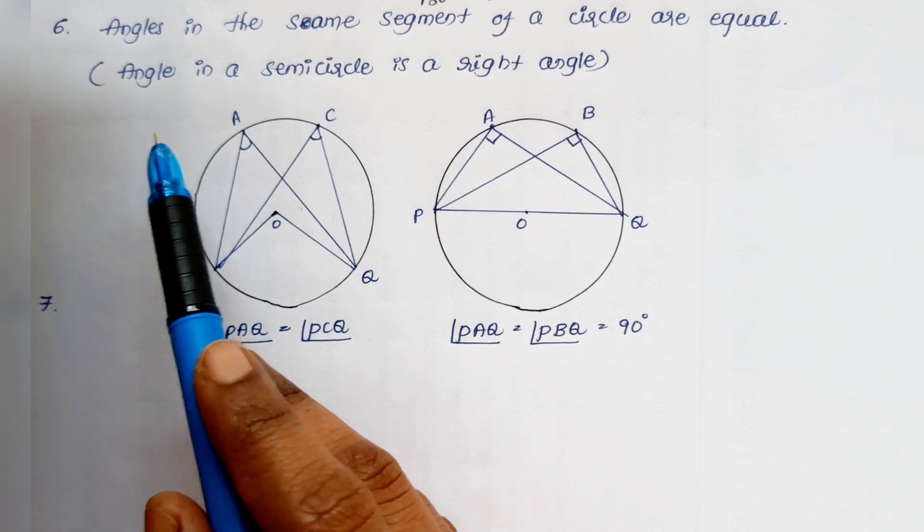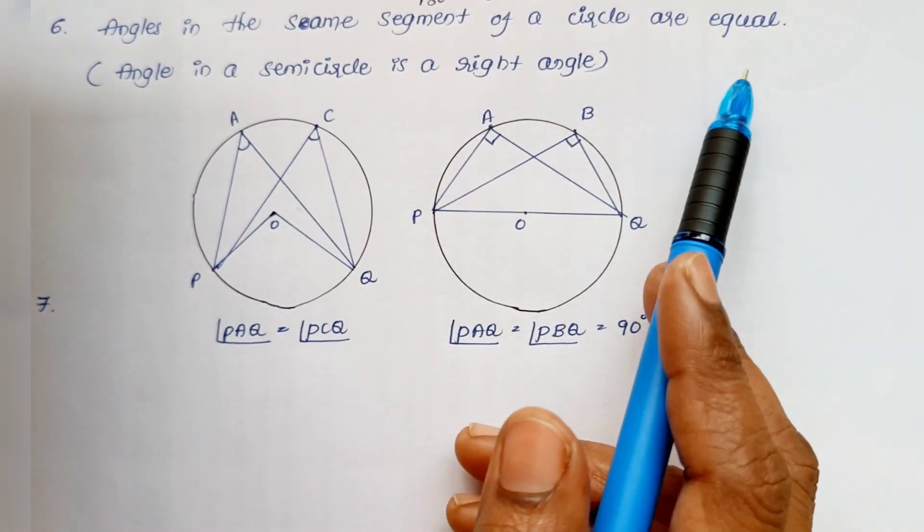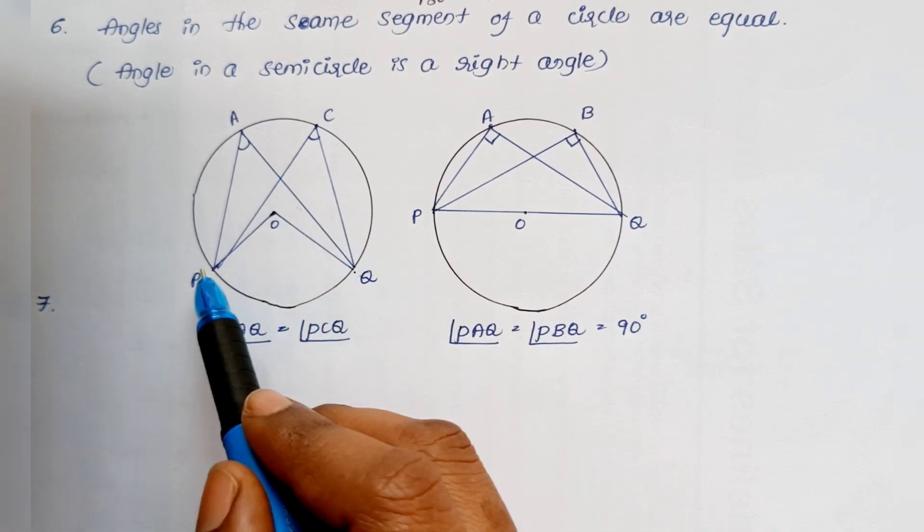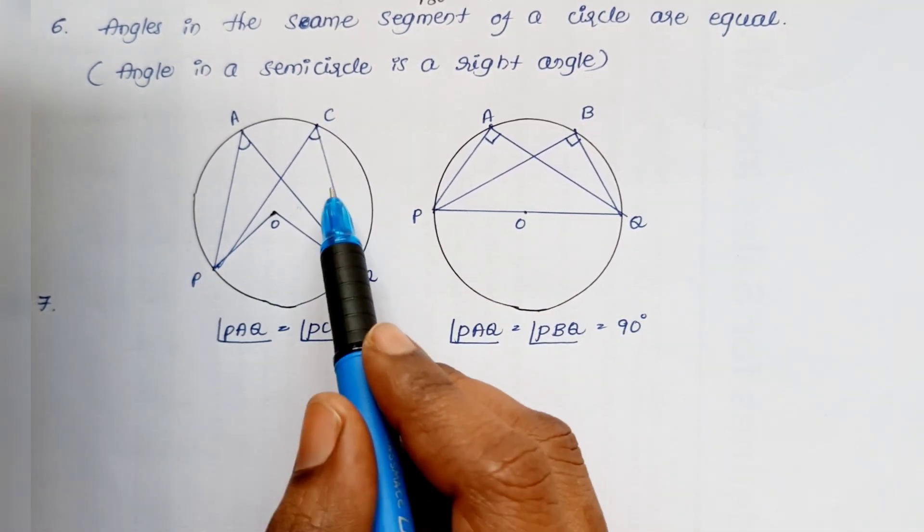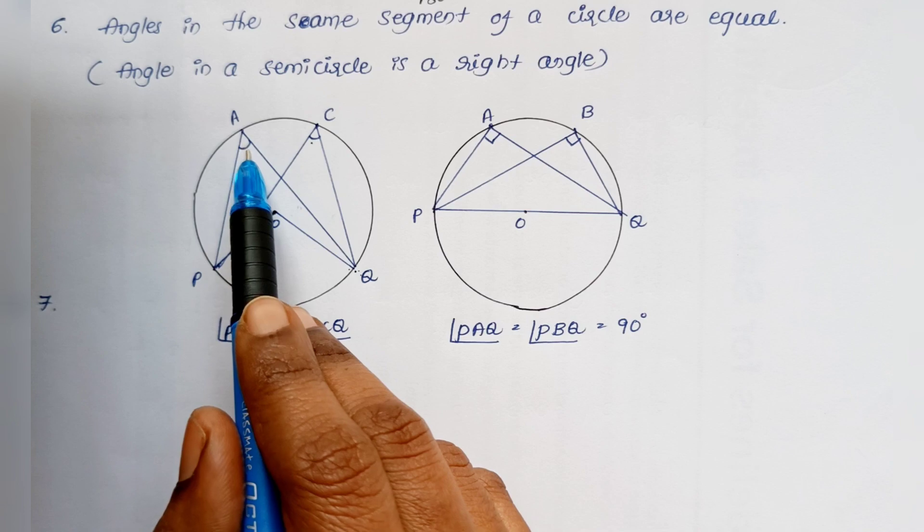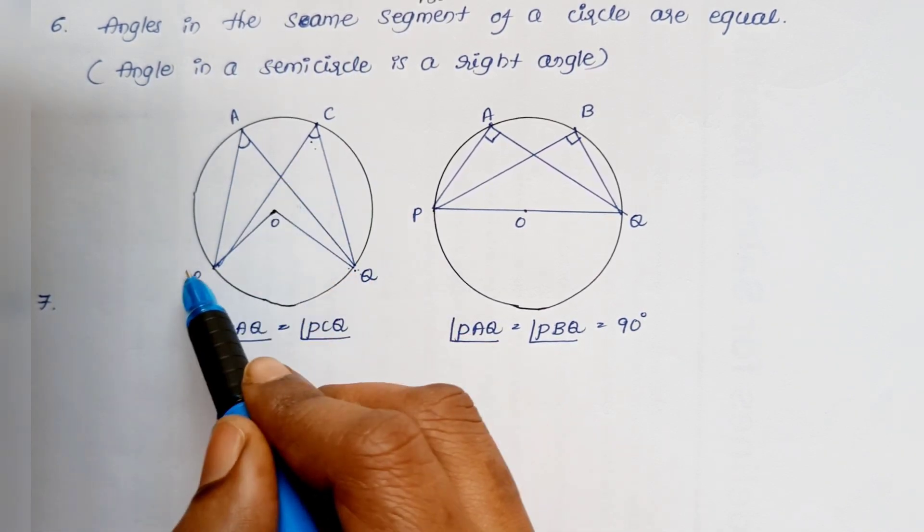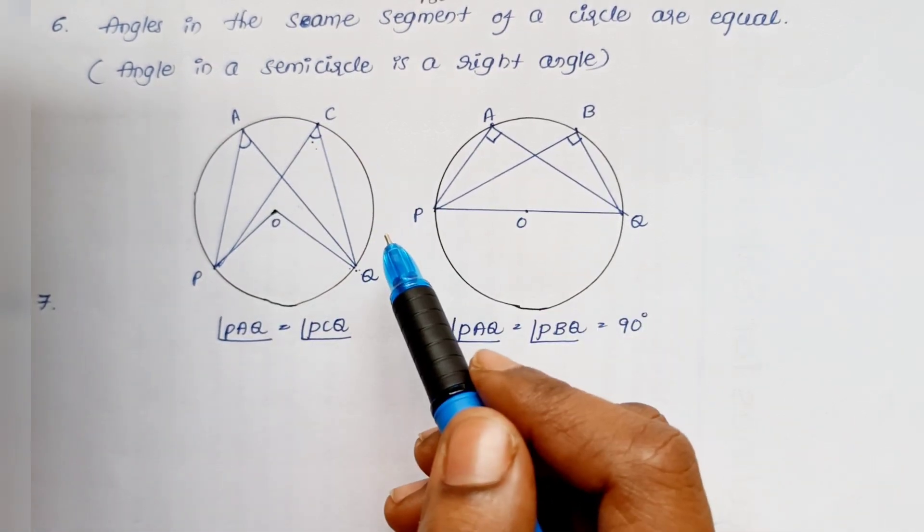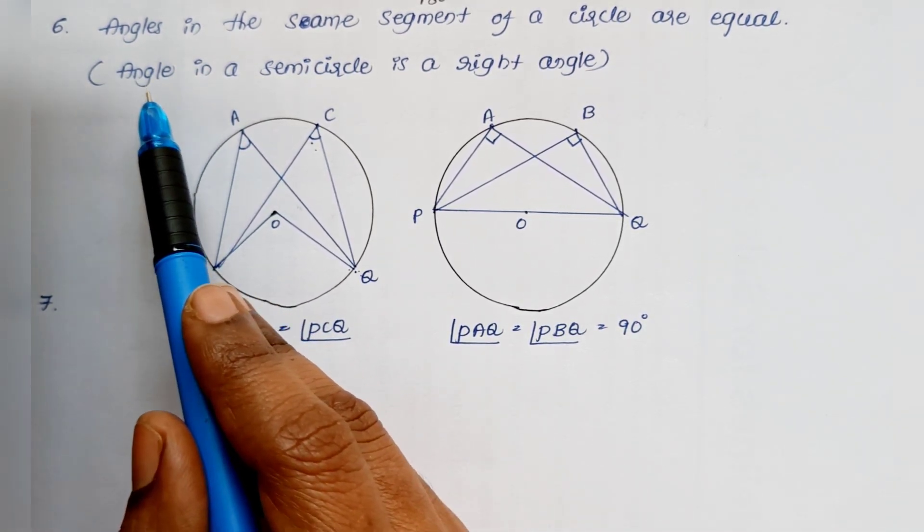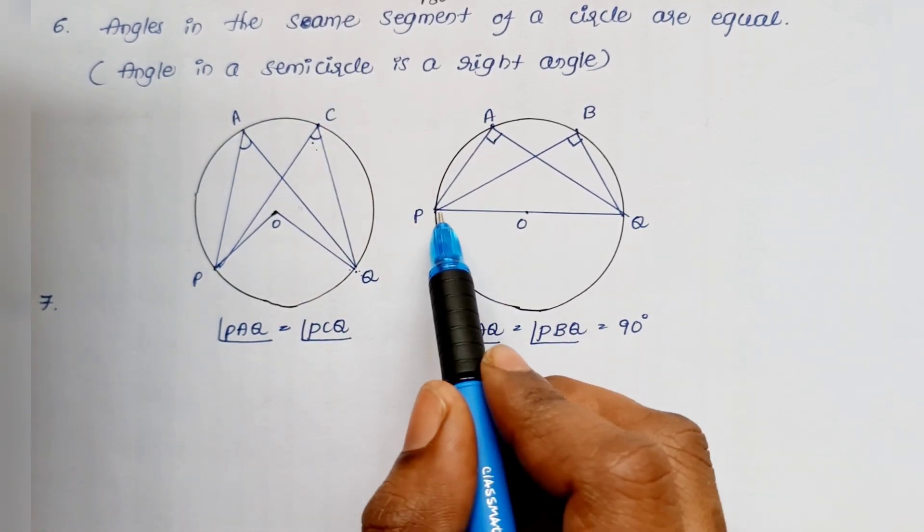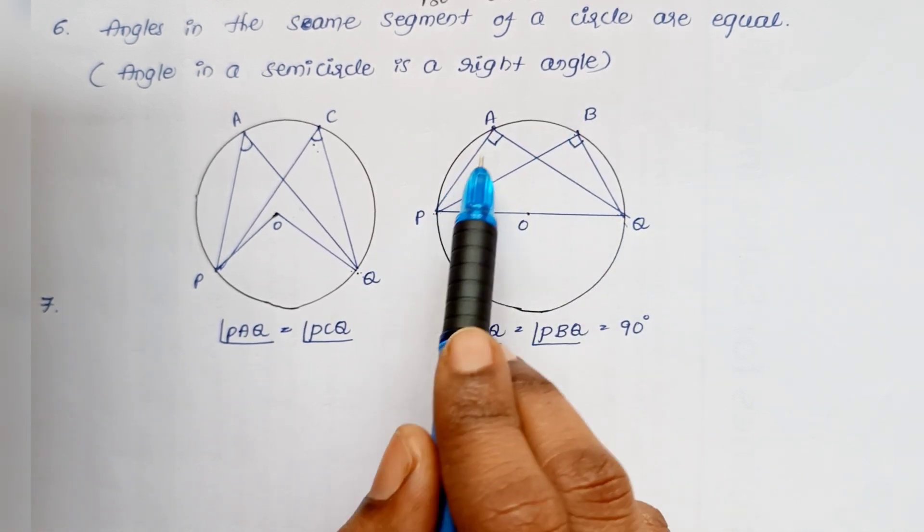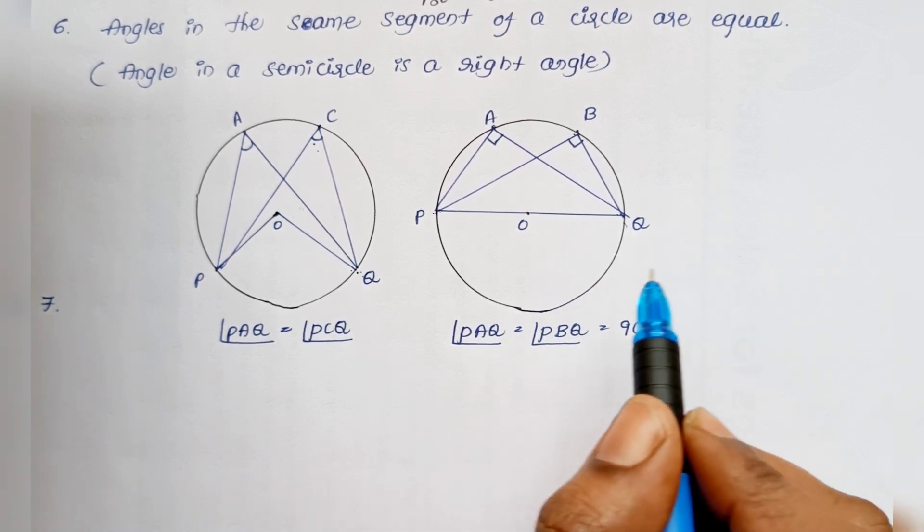Next is: angles in the same segment of a circle are equal. Here PQ is the chord. PAQ and PCQ are in the same segment, this region here. So these two angles are equal. If you take any other point in this segment, all the angles will be equal. One result from this is: angle in a semicircle is a right angle. In a semicircle, the angles are right angles. No matter which point you take, all the angles will be 90 degrees.